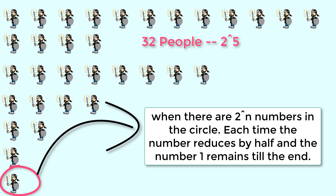The most important point to remember is: when there are 2 to the power of n numbers in the circle, each time the number reduces by half and number one remains till the end.